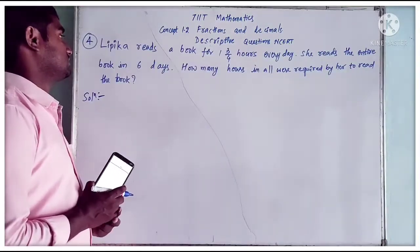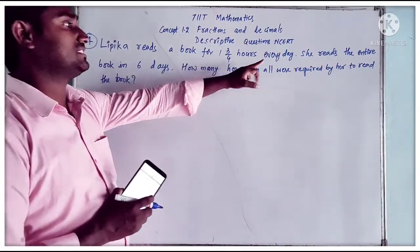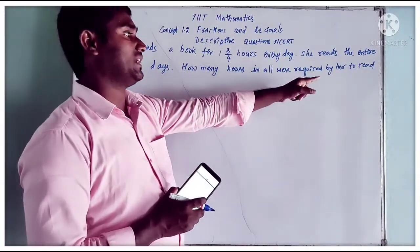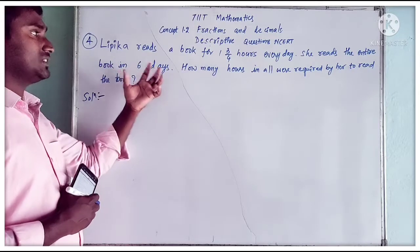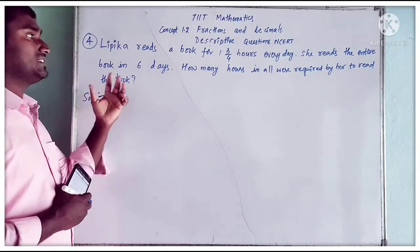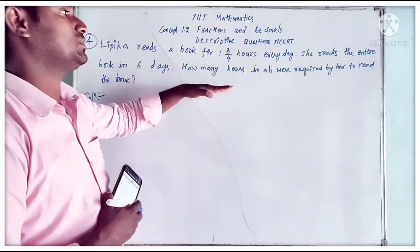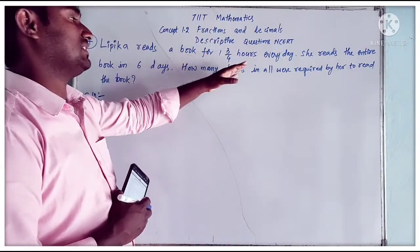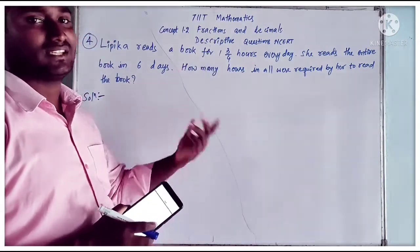Now I am going to discuss the fourth question. Lipika reads a book for 1 and 3 by 4 hours every day. She reads the entire book in 6 days. How many hours in all were required by her to read the book? In 1 day she reads 1 and 3 by 4 hours. So the total time taken to read the book in 6 days is 6 into 1 and 3 by 4 hours.